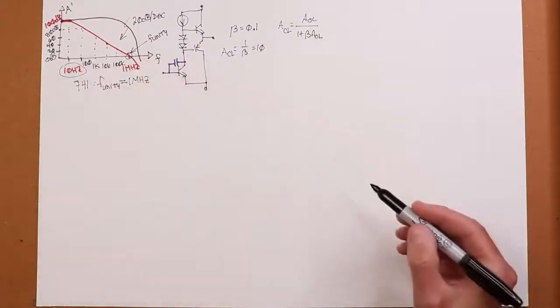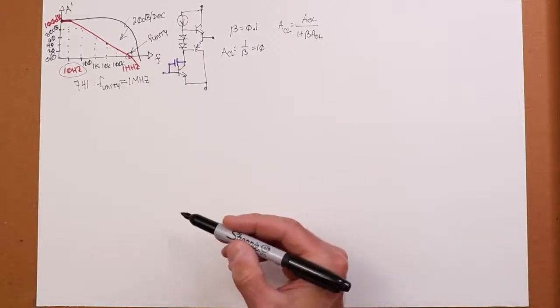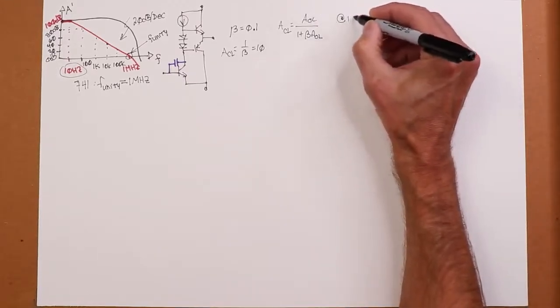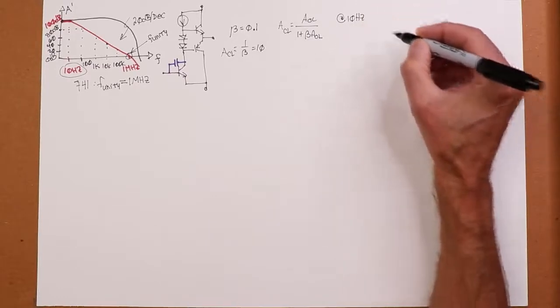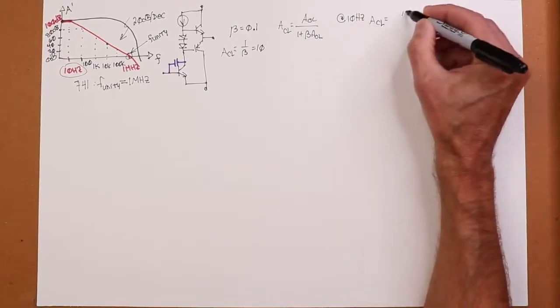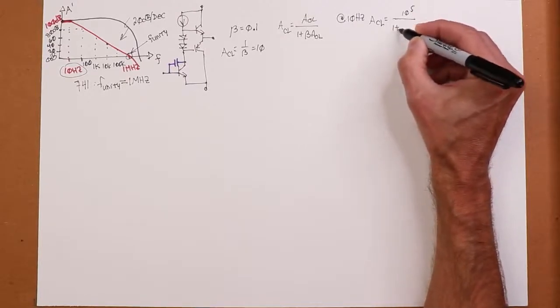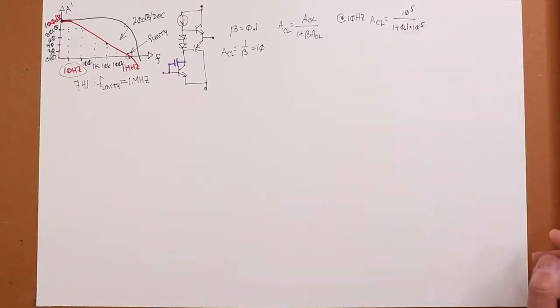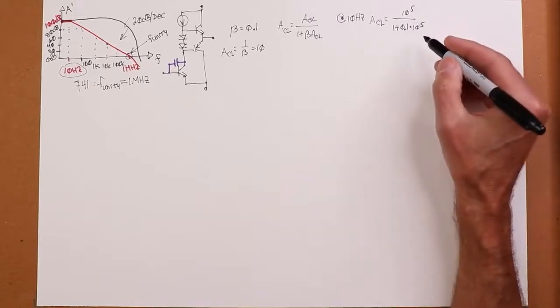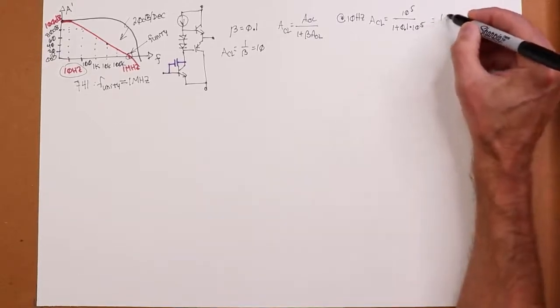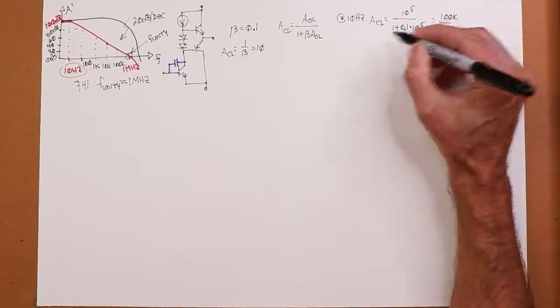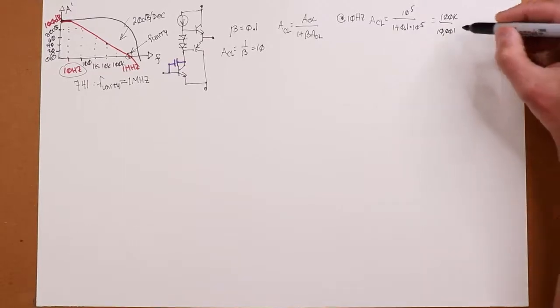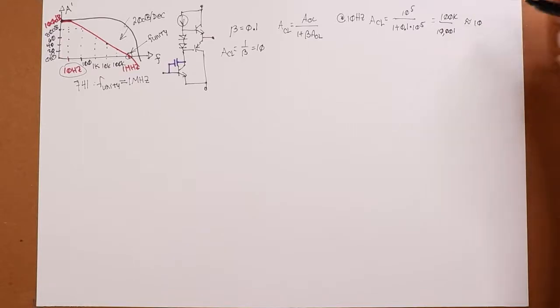So let's just kind of pop through here and see what happens at these different frequencies. If we come in at 10 hertz or below, A open loop is 100 dB, which in ordinary form is 10 to the fifth. So ACL, closed loop, is going to be 10 to the fifth divided by 1 plus 0.1 times 10 to the fifth. So what do we get out of that? Well, that's 10 to the fifth, that's 100,000 over, that's 10,001. Well, that's pretty darn close to 10.